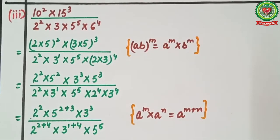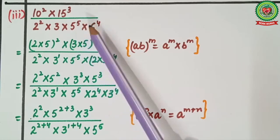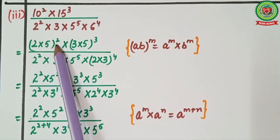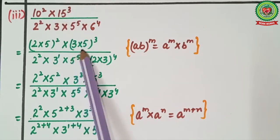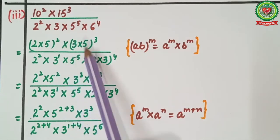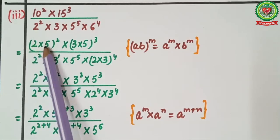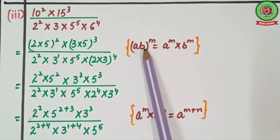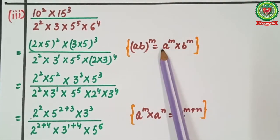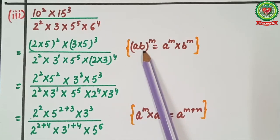Third example: (10² × 15³) upon (2² × 3 × 5⁵ × 6⁴). We make factors: 10 = 2 × 5, so 10² = (2 × 5)²; 15 = 3 × 5, so 15³ = (3 × 5)³; and 6 = 2 × 3, so 6⁴ = (2 × 3)⁴. Applying the rule (ab) raised to power m equals a raised to power m multiplied by b raised to power m.